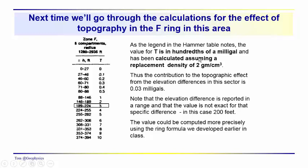Just remember that T is in hundredths of a milligal when you look at these tables. And they're calculated assuming a replacement density of 2 grams per cubic centimeter. We came up with a value of 0.03 milligals for that one sector. But remember, we have all those different rings. We have several sectors in each ring. So we have to keep track of the acceleration associated with an individual sector, add them all up, add the influence of all rings up in order to get the total topographic effect for all the rings that you think are important.